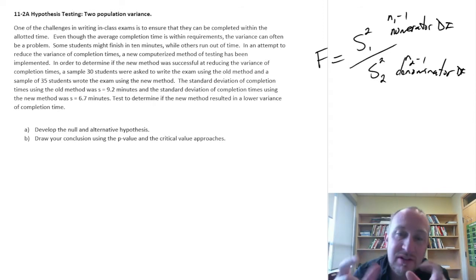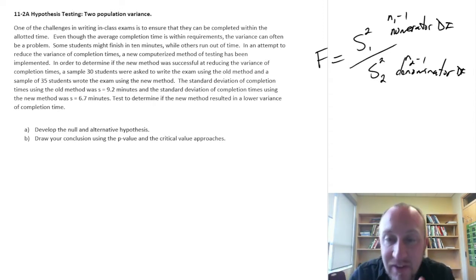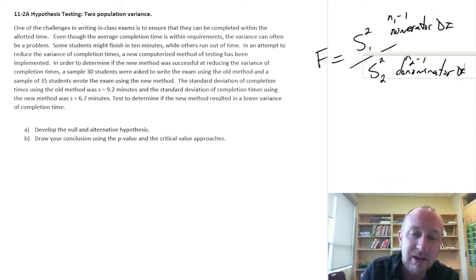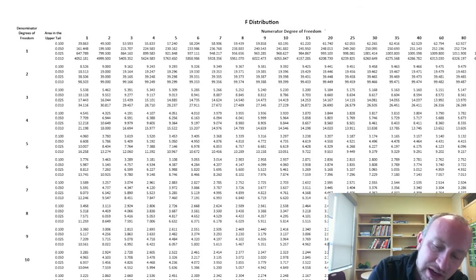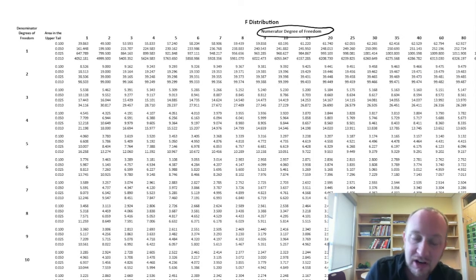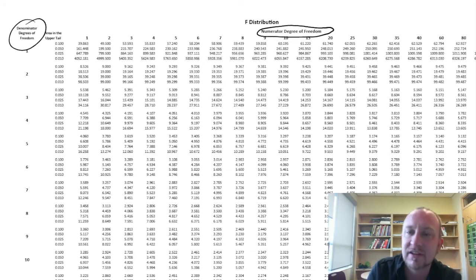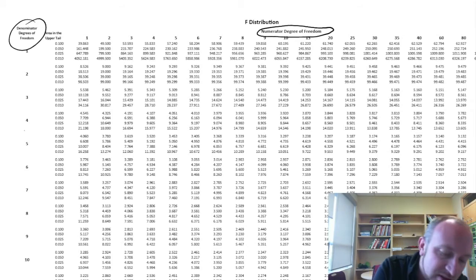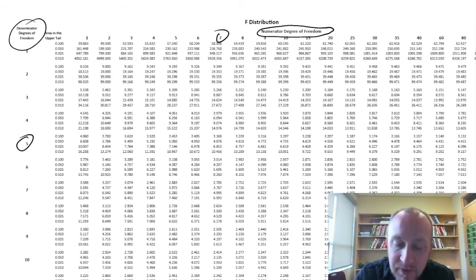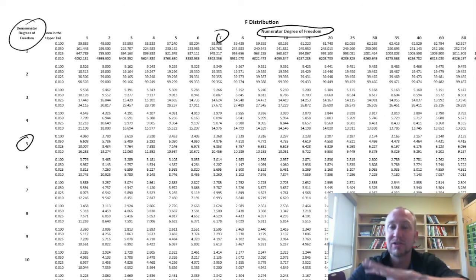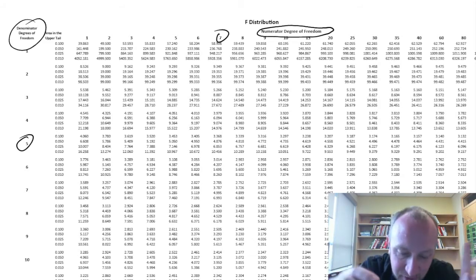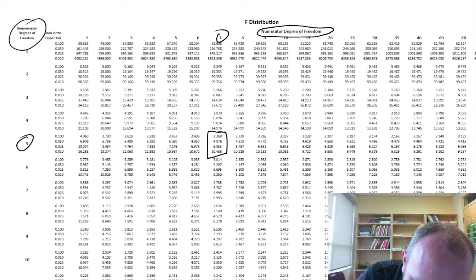As a result of these two degrees of freedom, it gives rise to a significant number of variations on this distribution. Here are our F-tables. We have numerator degrees of freedom across the top and denominator degrees of freedom down that first column. For each variant of the distribution — say, five degrees of freedom in the denominator and seven in the numerator — that's one variant.